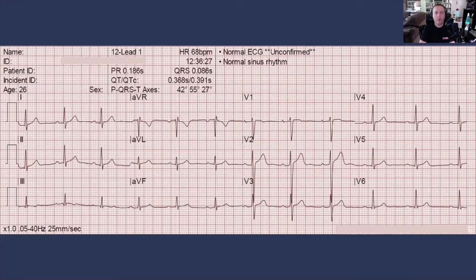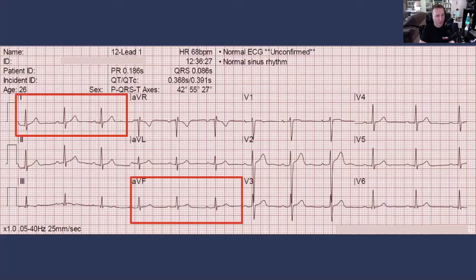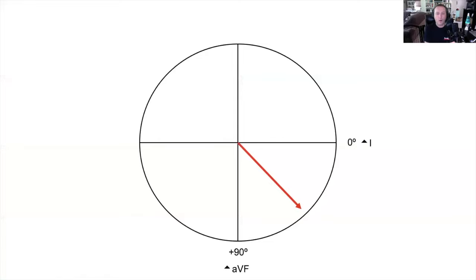Getting back to this normal ECG, if we're going to look at its axis, there are different ways we can calculate this. One of the easiest is the so-called quadrant method, which uses lead 1 and lead AVF. You'll notice here we have an upright QRS complex in lead 1 and an upright QRS complex in lead AVF. Because that is true, we can prove that the heart's QRS axis is somewhere between 0 and 90 degrees — what we would call a normal or left-inferior axis.